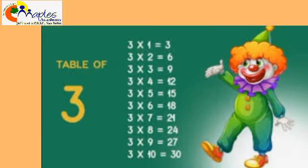Let's start with me: 3 1s are 3, 3 2s are 6, 3 3s are 9, 3 4s are 12, 3 5s are 15, 3 6s are 18.